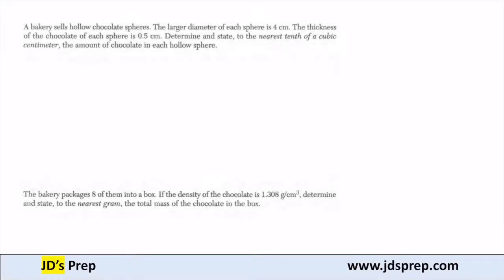In this example, a bakery sells hollow chocolate spheres. The larger diameter of each sphere is 4 centimeters. Because the diameter is 4 centimeters, that tells us the radius is 2 centimeters.